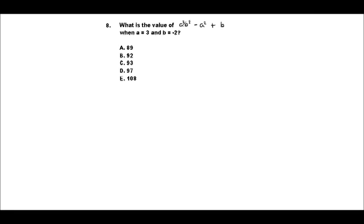This is question 8 of the ACT math exam that I'm working through, and this one has to do with testing you on your ability to recognize and use exponents together with negative numbers. The question reads: what is the value of a³ × b² - a² + b when a equals 3 and b equals -2?